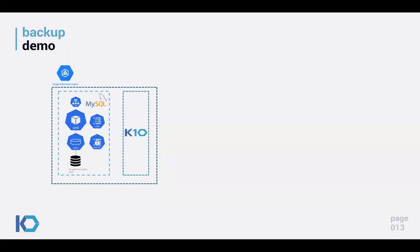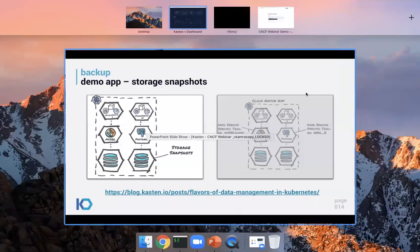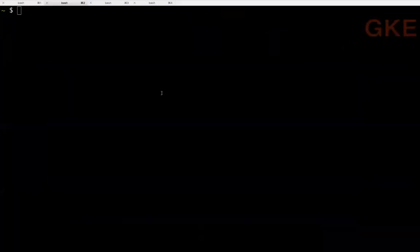The MySQL app has a single pod using a PVC backed by Google Persistent Disk, along with a ConfigMap and a Secret. We'll snapshot it and move that snapshot into object storage. I'll leverage storage snapshots — the pattern on the left. Let me switch to my terminal. This is my GKE cluster.